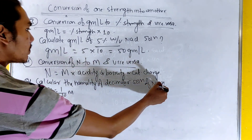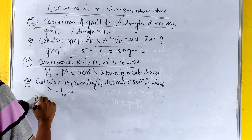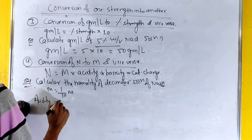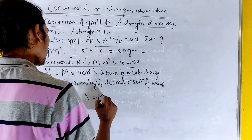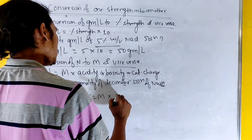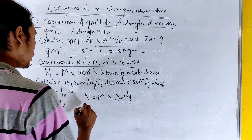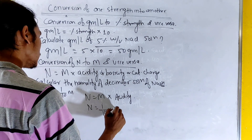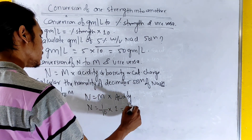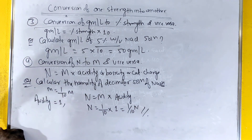Normality equals molarity into acidity. For NaOH, the number of replaceable OH minus is 1. So normality equals 1/10 into 1, which gives normality of 1/10 N solution.